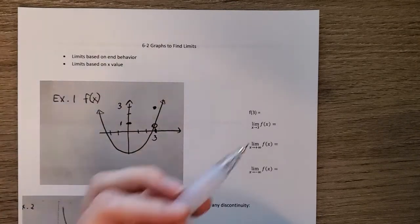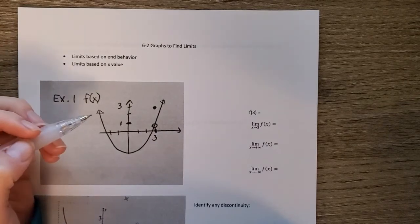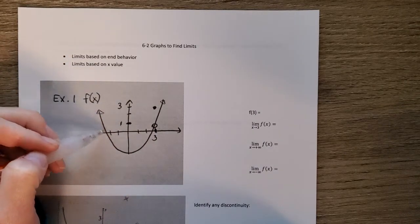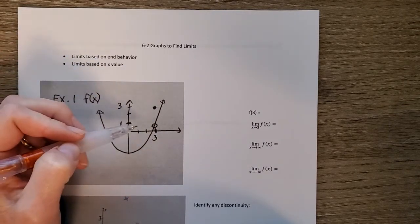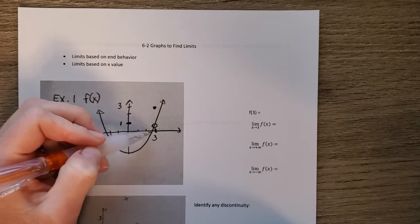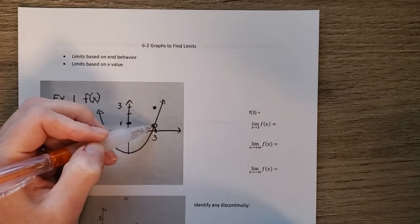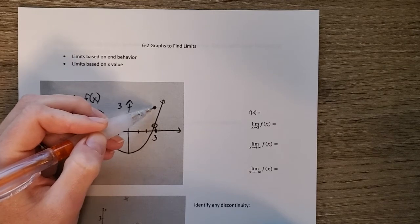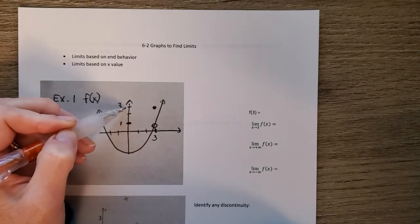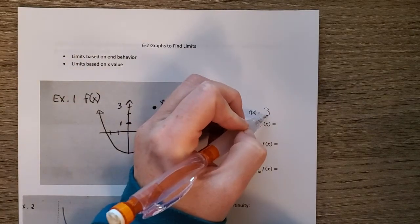The first question is to find f of 3 — the value of the function when x is 3. We go to x equals 3. There's a hole there and the value jumps up to the solid point. Solid points are the actual values, so reading across, f of 3 is 3.